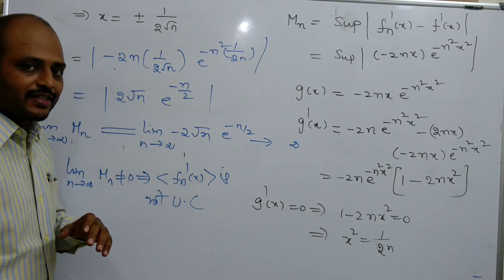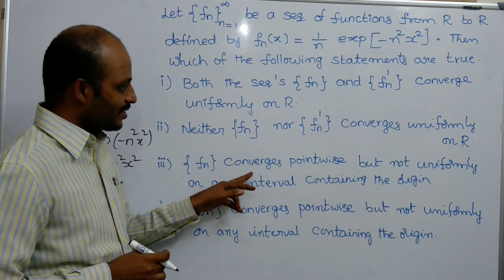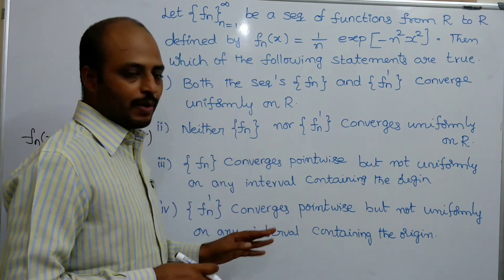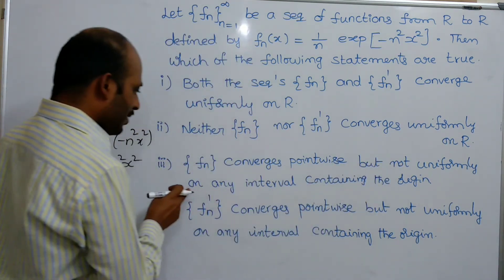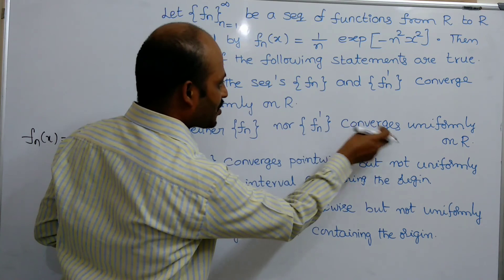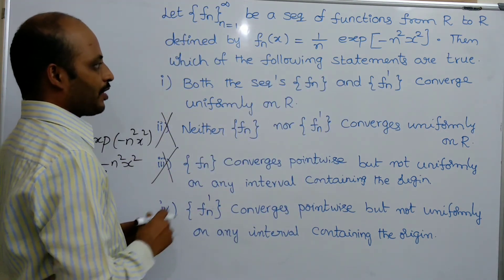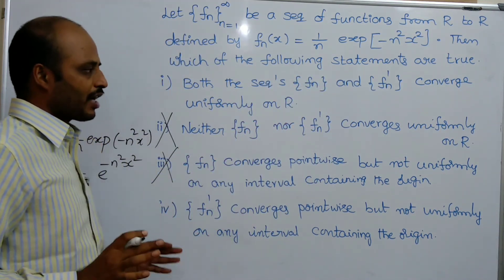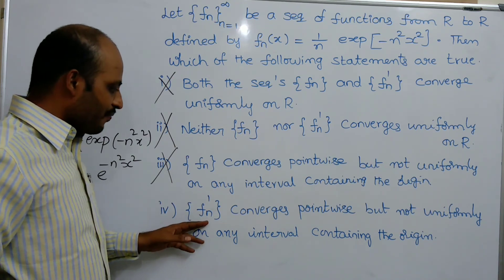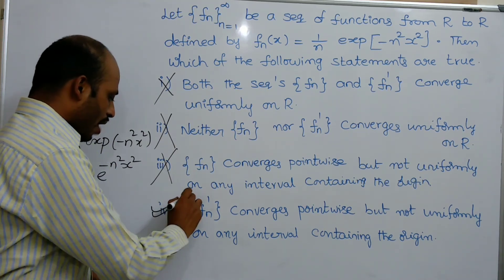fn'(x) is pointwise convergent but not uniformly convergent. We observe that fn converges both pointwise and uniformly, so option 3 (fn not uniformly convergent) is wrong. Option 2 (neither fn nor fn' converges uniformly) is also wrong. Option 1 (both fn and fn' converge uniformly) is wrong since fn' is not uniformly convergent. Therefore option 4 is correct: fn' converges pointwise but not uniformly on any interval containing the origin.